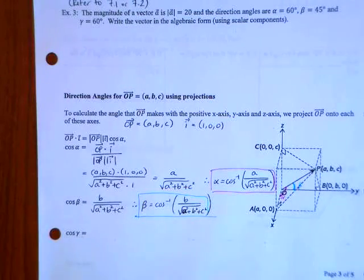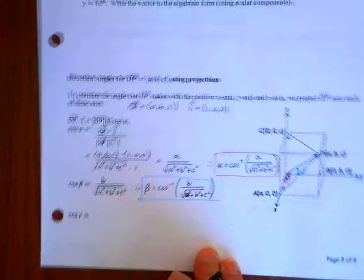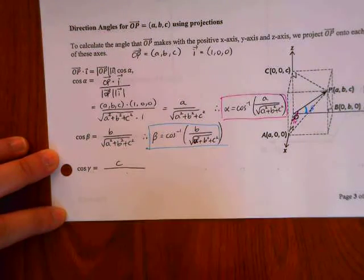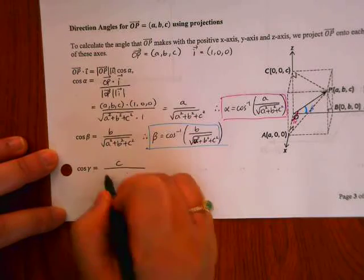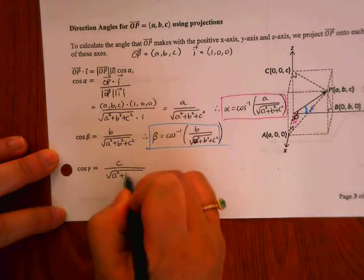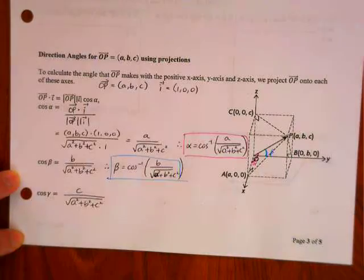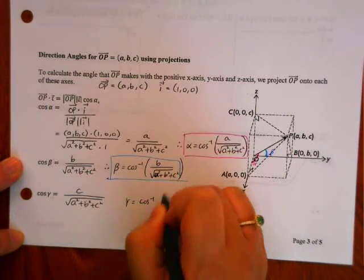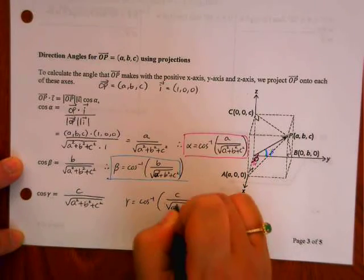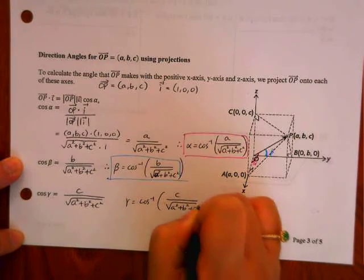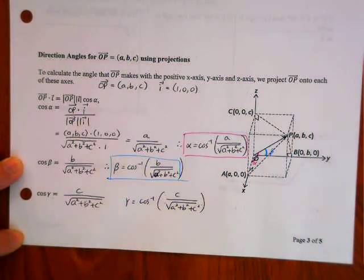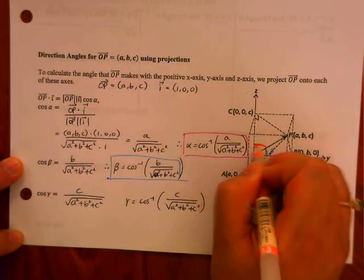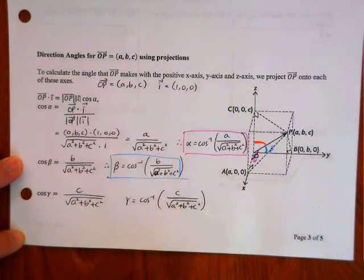Then last but not least, for cos gamma then, what's the formula? C over root A squared plus B squared plus C squared. And then angle gamma is cos inverse of C over root A squared plus B squared plus C squared. And that would be this angle here between the vector OP and the positive Z-axis.